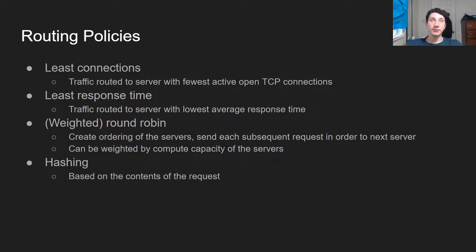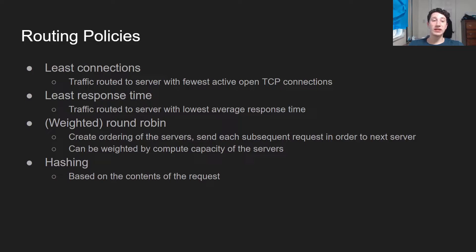Here are some ways of deciding which server you send each request to. One of them is least connections — you look at which servers have a bunch of open TCP connections and send requests to ones that don't. Least response time is where the load balancer keeps track of the average response time from each server and uses that as a heuristic to decide which server has the least load. There's also round robin, which is basically deciding an ordering of the application servers and making sure each request goes to every node in that order once before restarting.